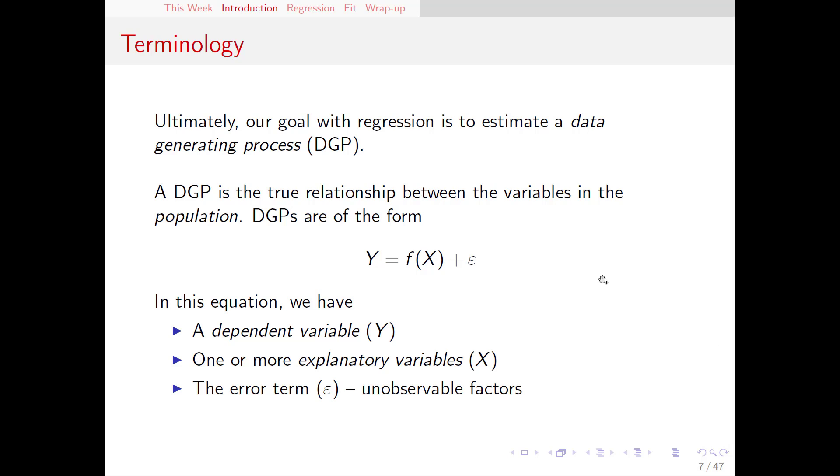When we look at a DGP, we have y on the left hand side—that's our dependent variable—and on the right hand side we have f(x). f(x) is called our determining function. That's the function that translates whatever our x's are into our y. And then there's one more term here, the Greek letter epsilon.